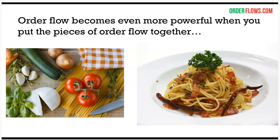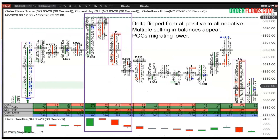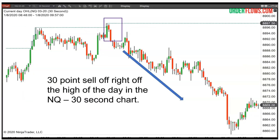Order flow is like cooking — you have different pieces of market analysis: delta, imbalances, and point of controls. Those are your ingredients. You need to put them together to make a full meal. Here's Nasdaq from a week or two ago — a 30-point sell-off right off the high of the day on a 30-second Nasdaq chart. These markets have been very generous to traders this year. If you know what to look for on a footprint chart, you can identify these moves.